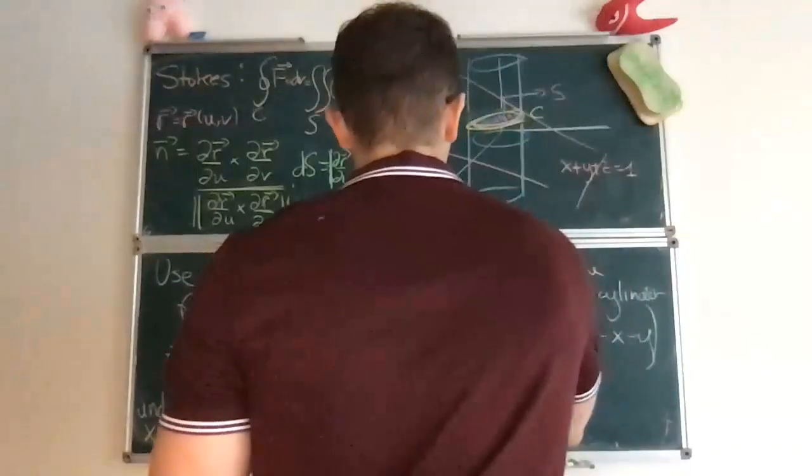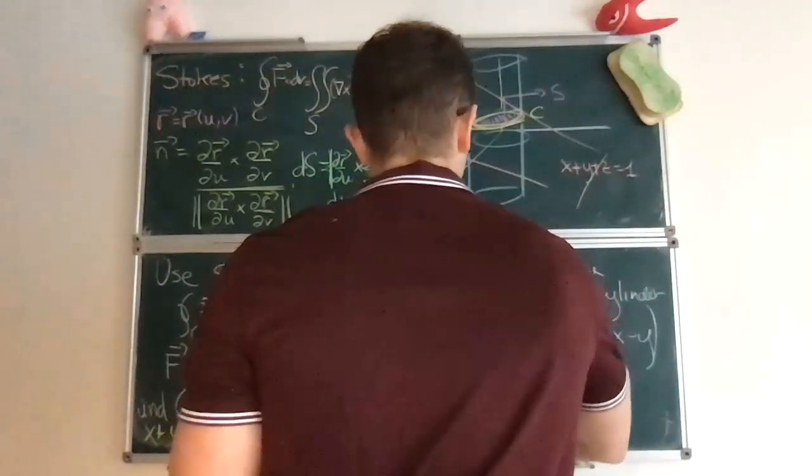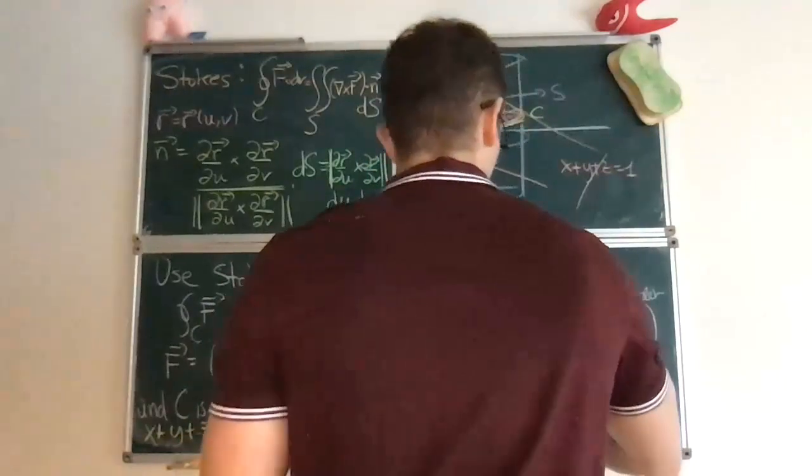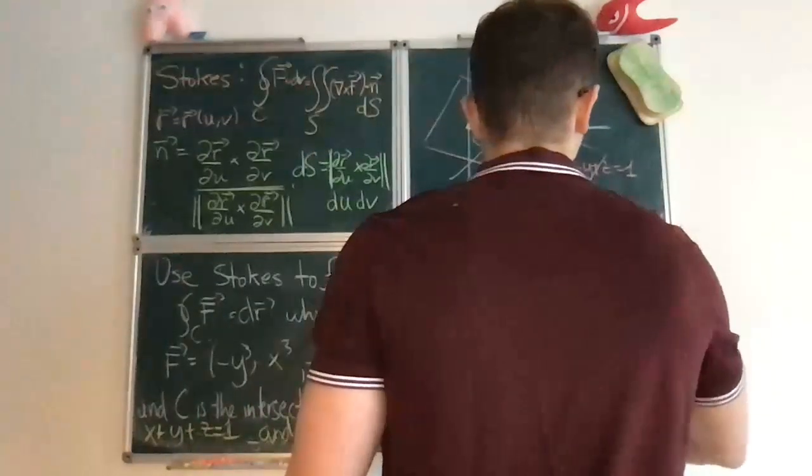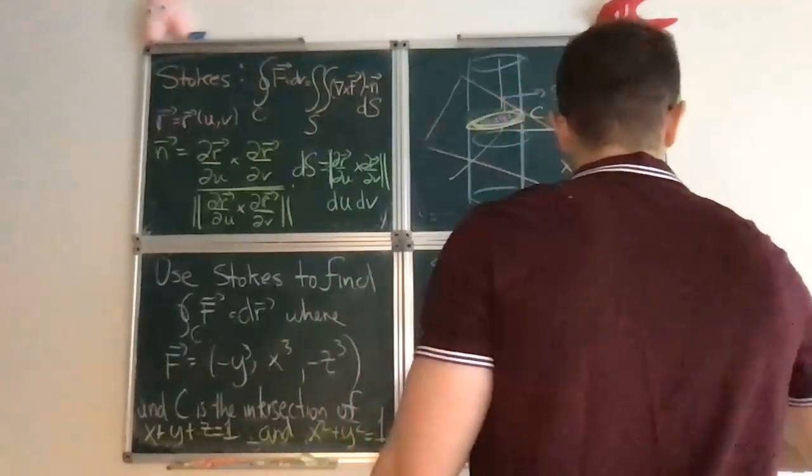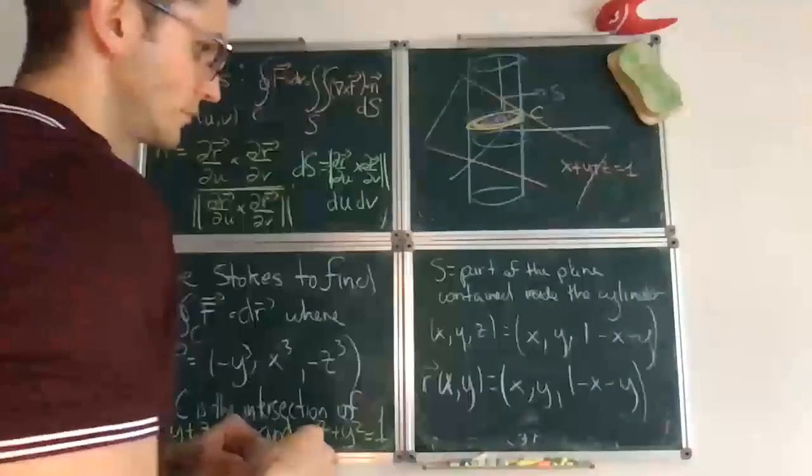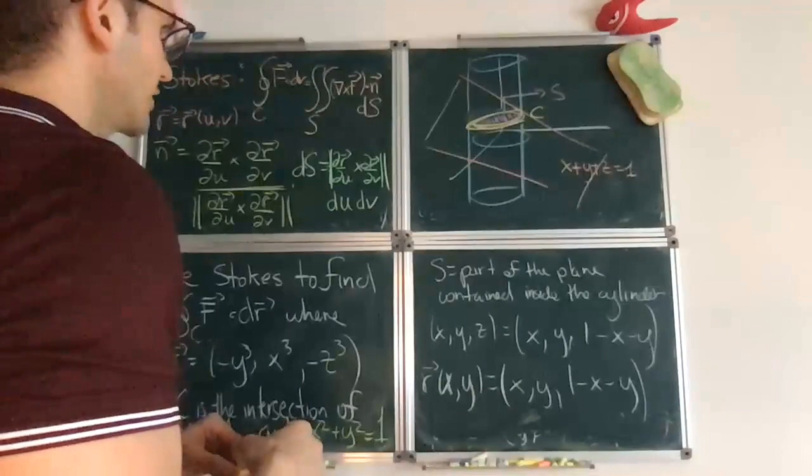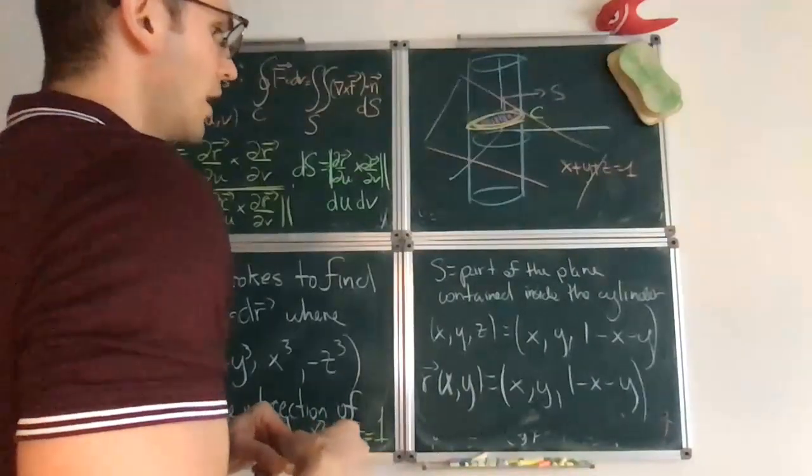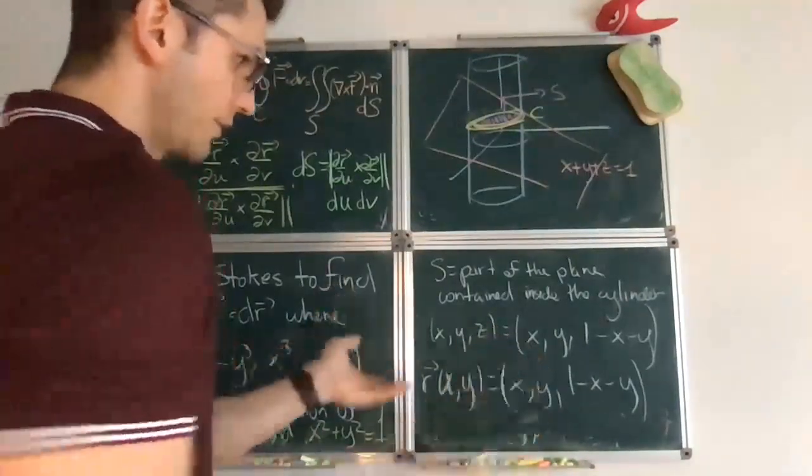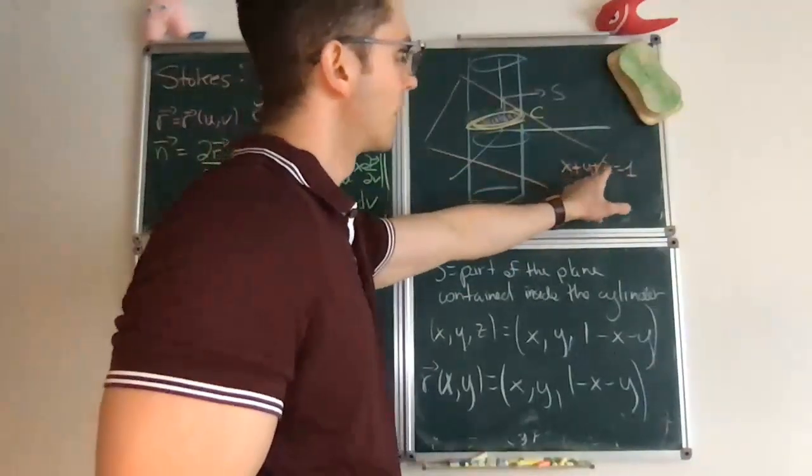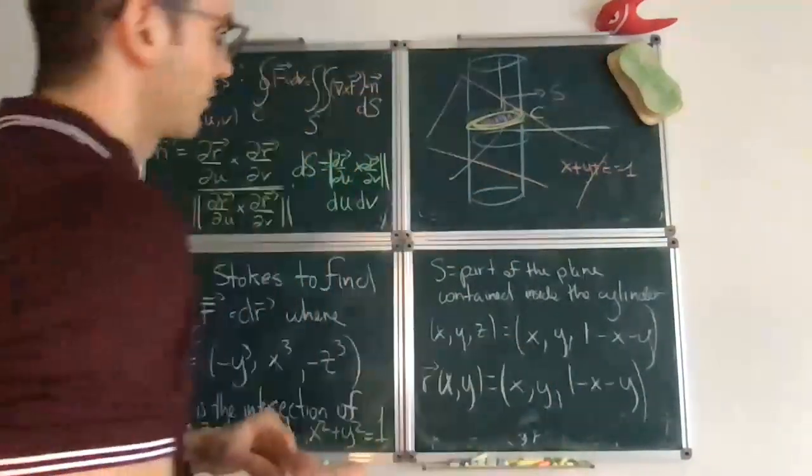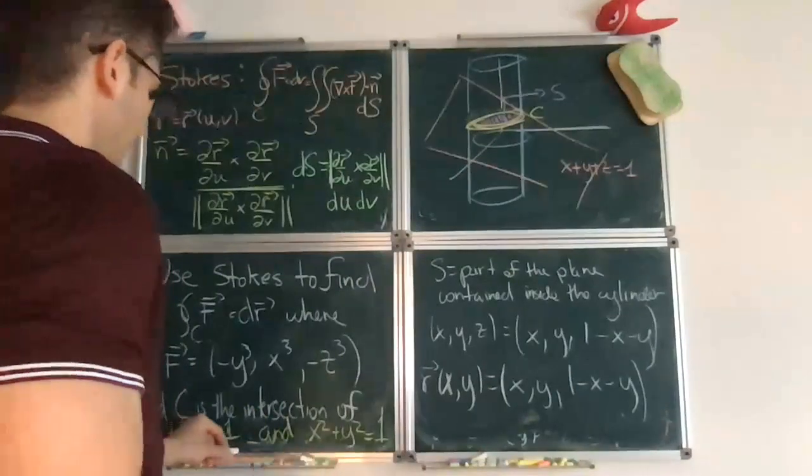So the parameterization in this case is fairly easy, it's just in terms of x and y. It's just any point is of the form x comma y comma 1 minus x minus y. So it's like a version of Cartesian coordinates. We're using Cartesian coordinates, but you just have to use the fact that one of the variables disappears when working on the plane.